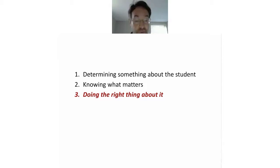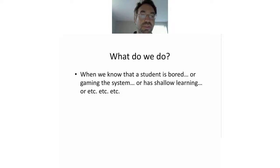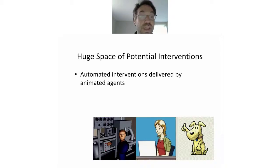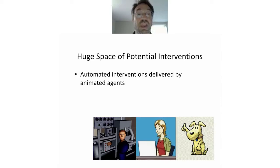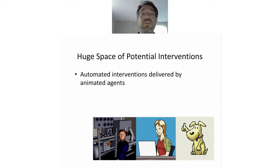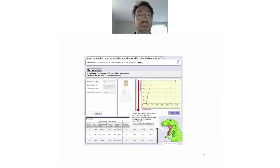So let's say we know something about the learner and we know it matters. How do we do the right thing? It's really hard to do the right thing. When we know a student is bored, gaming the system, or has shallow learning that won't prepare them to go forward, there's a huge space of potential interventions. One category is automated interventions delivered by animated agents. On the left, you see Steve, who figures out when students are struggling to understand a control panel and uses gestures and pointing to walk them through the process. In the middle, you see MathSpring, a system for younger learners that mirrors the emotions of learners to make them feel understood and help them stick with difficult material. And on the right, you see Scooter, a puppy character who looks happy when students use the software appropriately and gets angry when they don't.